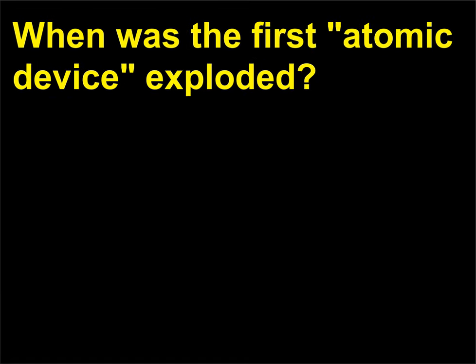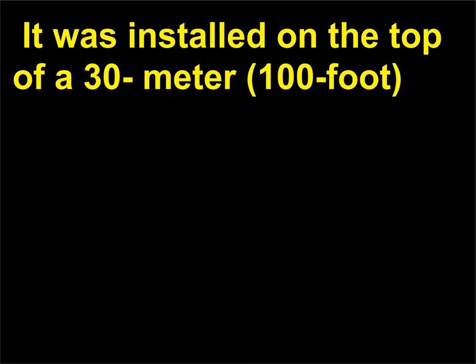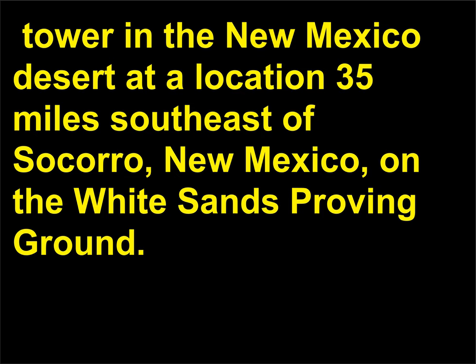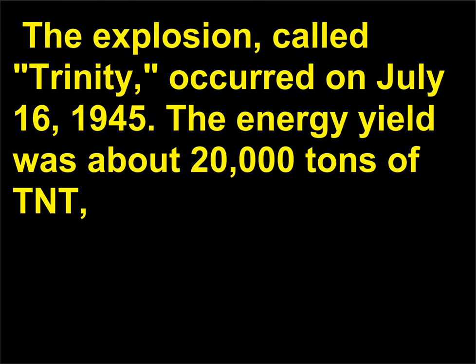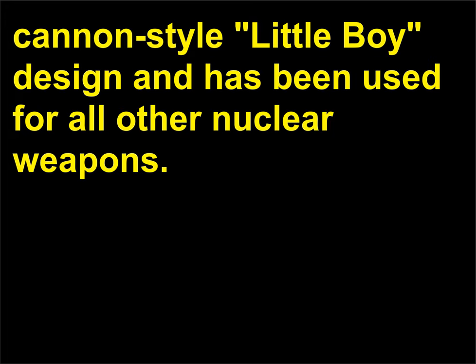When was the first atomic device exploded? The gadget was a test version of the plutonium bomb. It was installed on the top of a 30-meter (100-foot) tower in the New Mexico desert at a location 35 miles southeast of Socorro, New Mexico, on the White Sands Proving Ground. The explosion, called Trinity, occurred on July 16, 1945. The energy yield was about 20,000 tons of TNT — more than twice what had been expected. The implosion-type bomb was much safer and more effective than the cannon-style Little Boy design and has been used for all other nuclear weapons.